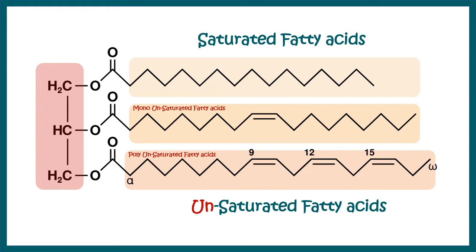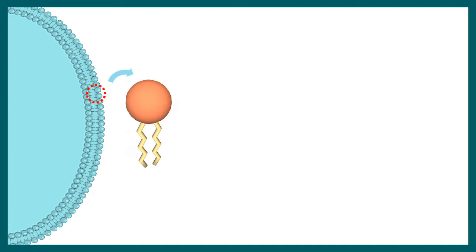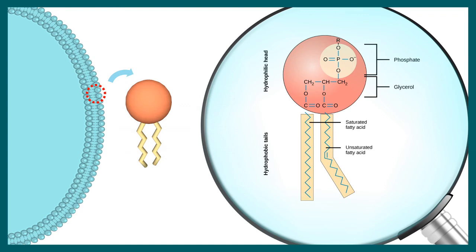Now let's talk about phospholipids before we compare phospholipids and sphingolipids, so that we get a better understanding of these two. Phospholipids are found in the plasma membrane. They have a phosphate head which is hydrophilic and there is a hydrophobic tail. In the hydrophilic head, the alcohol part is glycerol and there is also a phosphate group attached with the R group.